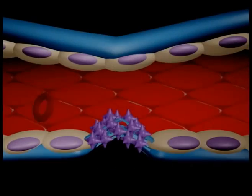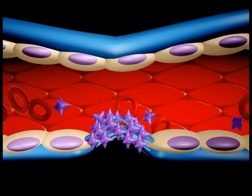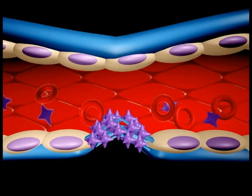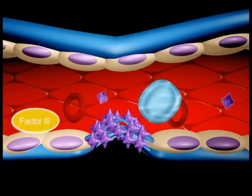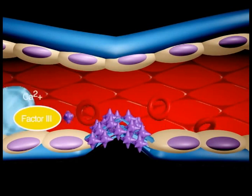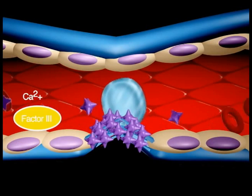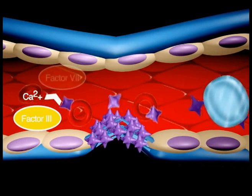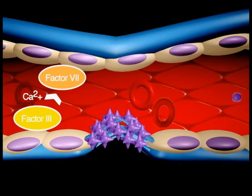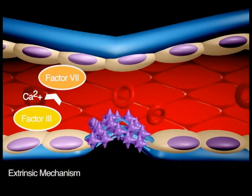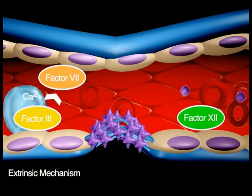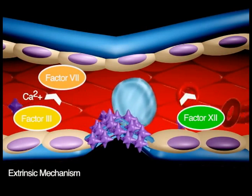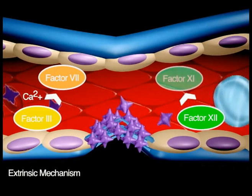The next hemostatic mechanism is coagulation. Damaged tissue releases factor III, which with the aid of calcium, will activate factor VII, thus initiating the extrinsic mechanism.